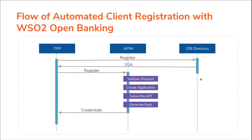After receiving the request, WSO2 API Manager will validate the request based on the specification. Then an application will be created and will subscribe to all the APIs added in the configuration. Finally, the keys will be generated for the created application and the TPP will be responded with the client credentials.